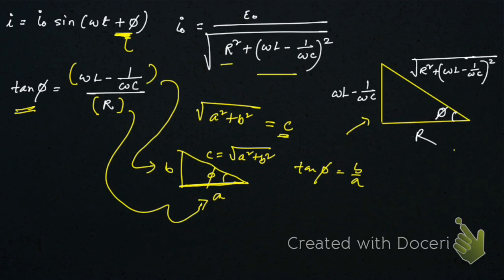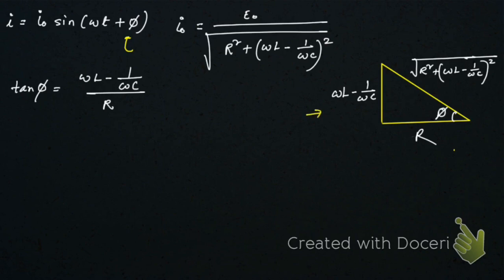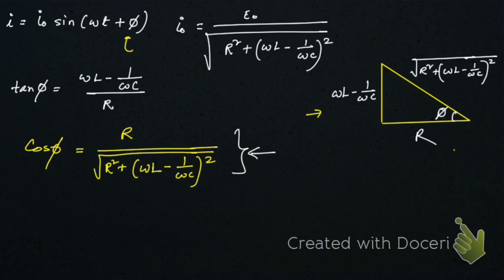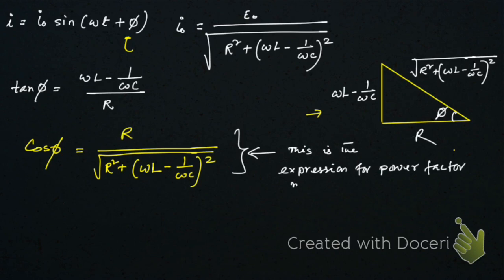From this figure we can say cos φ = R / √(R² + (ωL − 1/ωC)²). This expression is the power factor of an LCR circuit — this is the expression for the power factor in an LCR circuit.